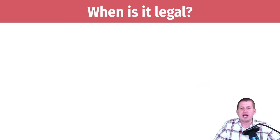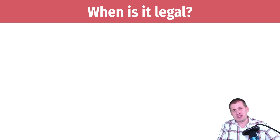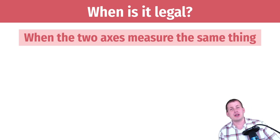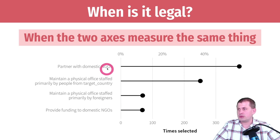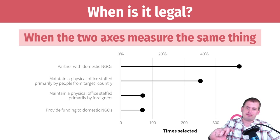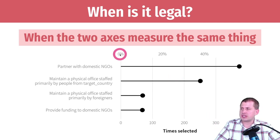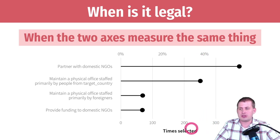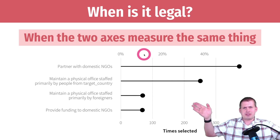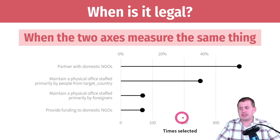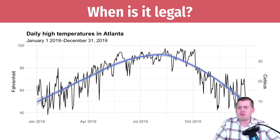Avoid this. It is legal in one specific circumstance: when the two axes measure the same thing. This is helpful if you want two versions of the same axis. For instance, in this plot from my dissertation research, it shows how many times survey respondents selected various options. You get the raw counts along the bottom x-axis, and there's a second axis at the top showing percentages — which is just a transformation of the total count. That's fine because it's not forcing a different scale, it's just a different version of the same scale.